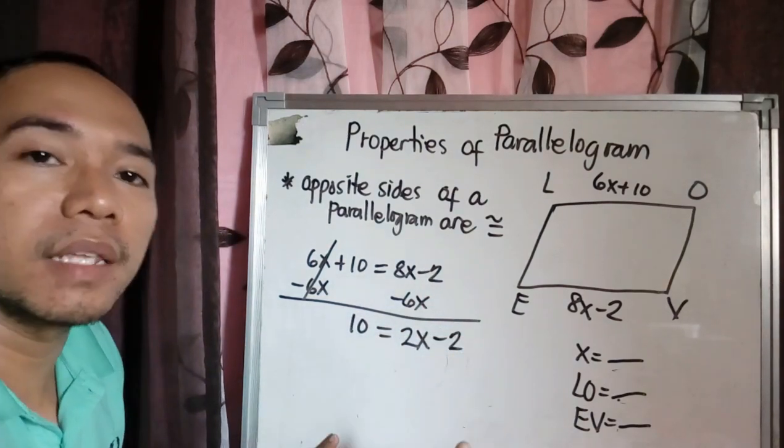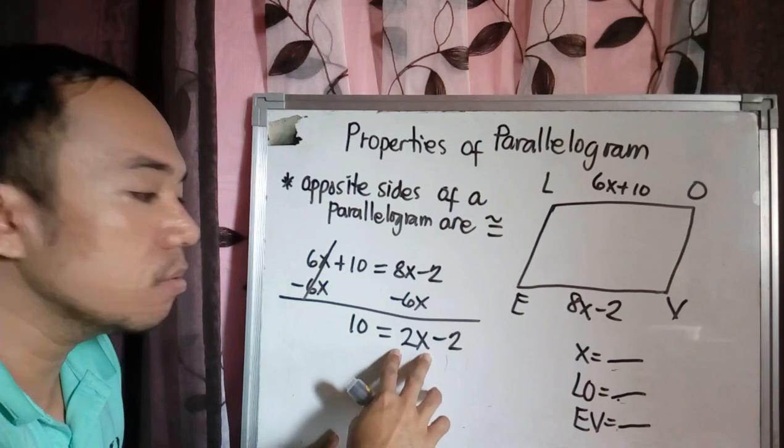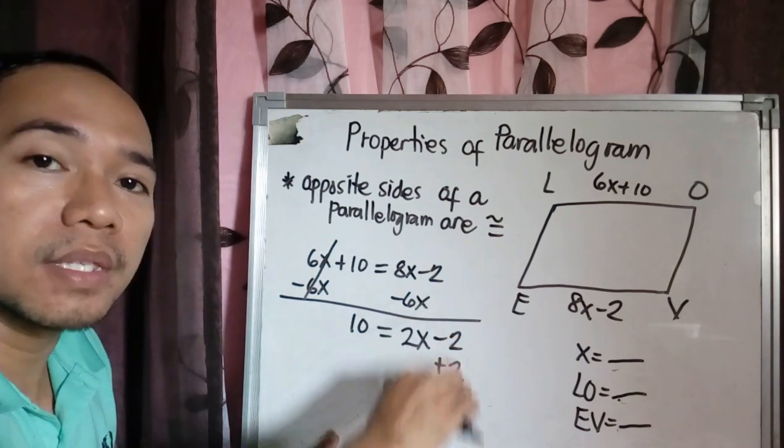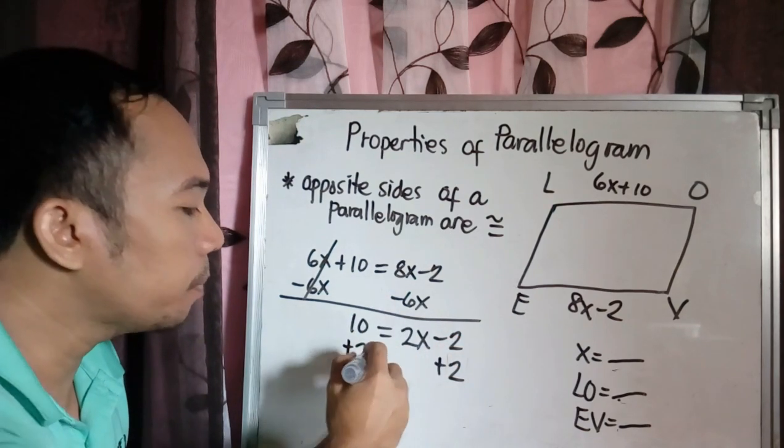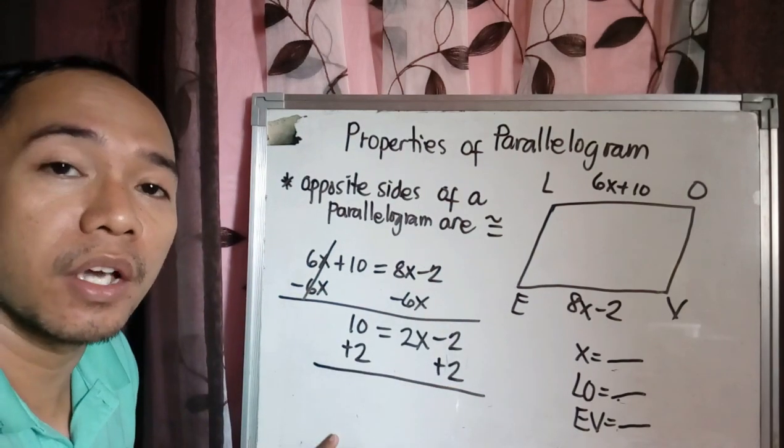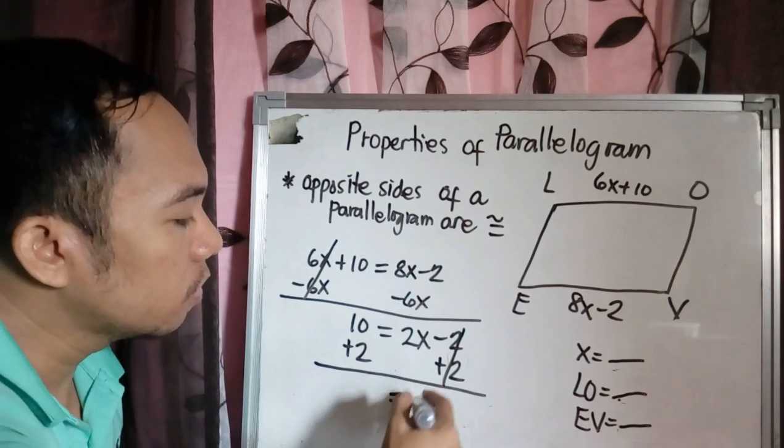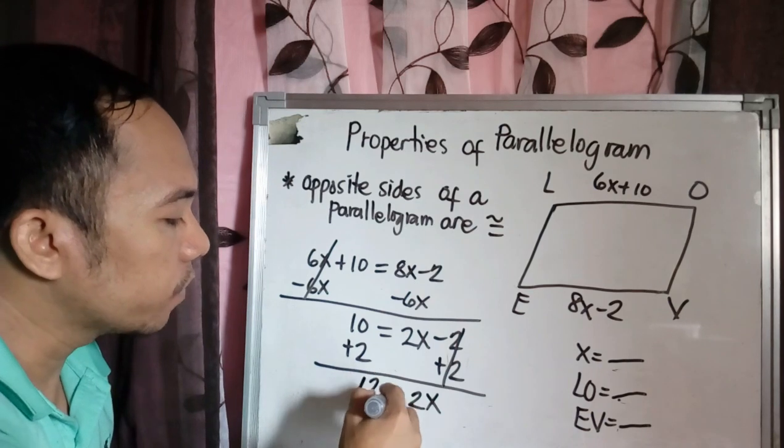Then how are you going to eliminate negative 2? Because you need to isolate this as 2X. So this is now plus 2 by opposite side to eliminate it. Another plus 2 to the other side by addition property of equality.